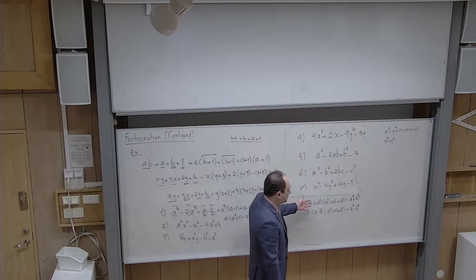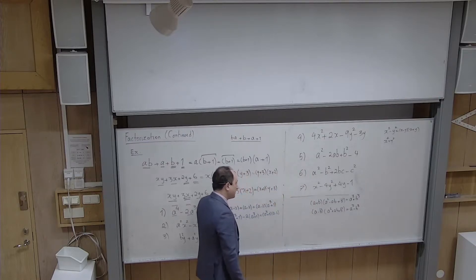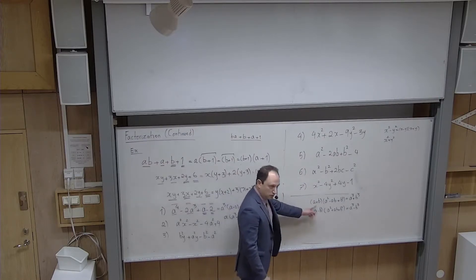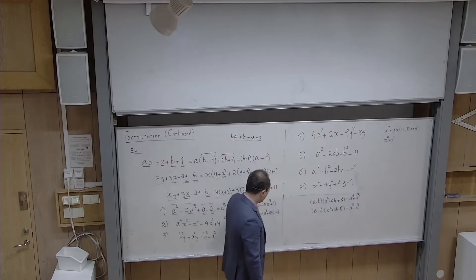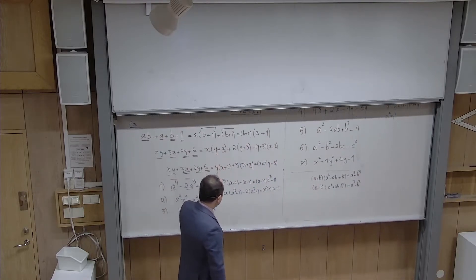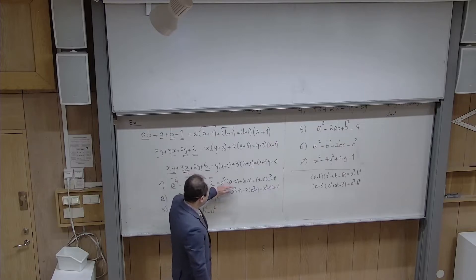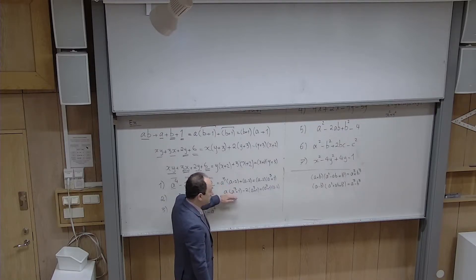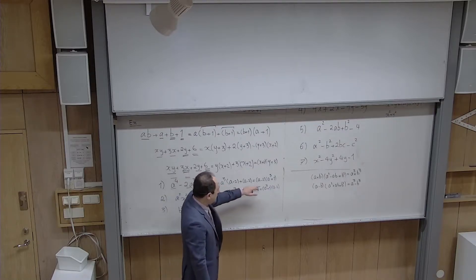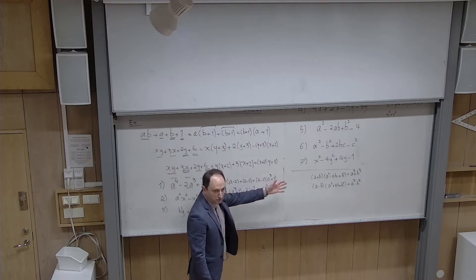For problem 2, completing the factorization: a² − 1 factors as (a − 1)(a + 1) by the conjugate rule, and x² − 4 factors as (x − 2)(x + 2). So the full factorized form is (a − 1)(a + 1)(x − 2)(x + 2).